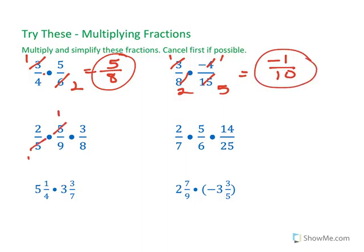I can cancel 5s. I can do 2 and the 8, and I can do the 3 and the 9, and I end up with 1 over 12.